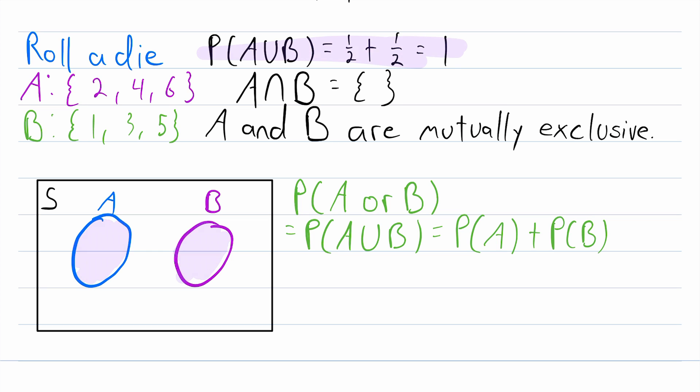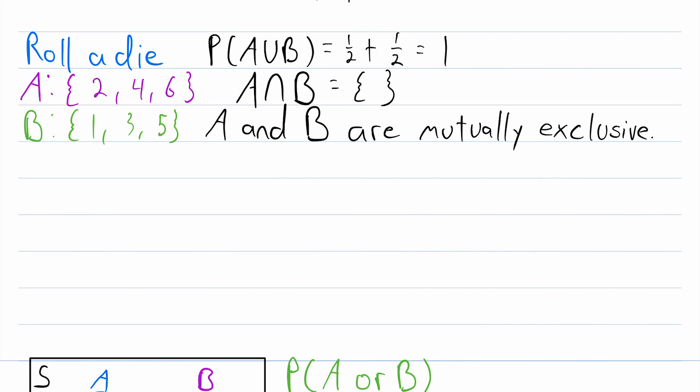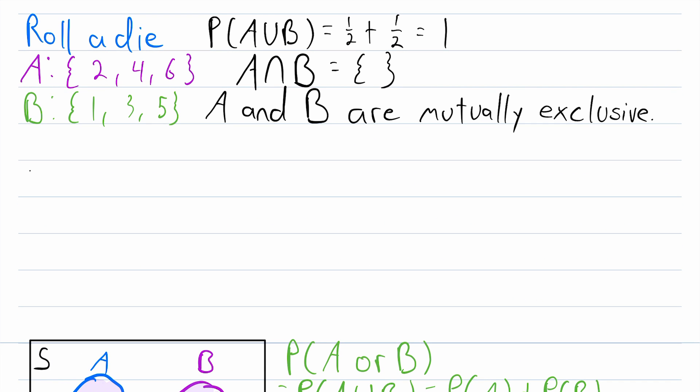And that should make sense, because when we roll a die, of course, we're either going to roll an even number or an odd number. So the probability that we roll an even or odd number is one. And then moving this down a little bit just to give us room to talk about one other thing. For mutually exclusive events A and B,